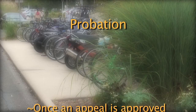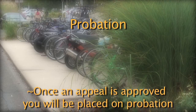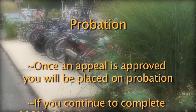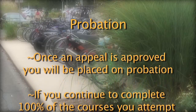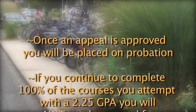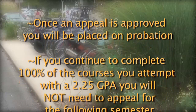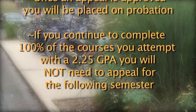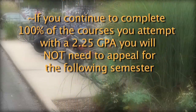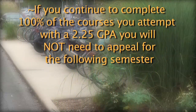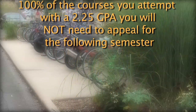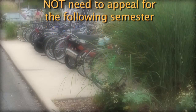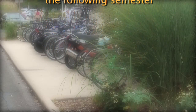If you have an appeal approved, you will be placed under financial aid probation for one semester. If you continue to complete 100% of your attempted credits with a term GPA of at least 2.25 during a semester on probation, you will not need to submit an appeal in order to receive financial aid for the following semester, unless you have reached the overall 180 attempted credit limit.